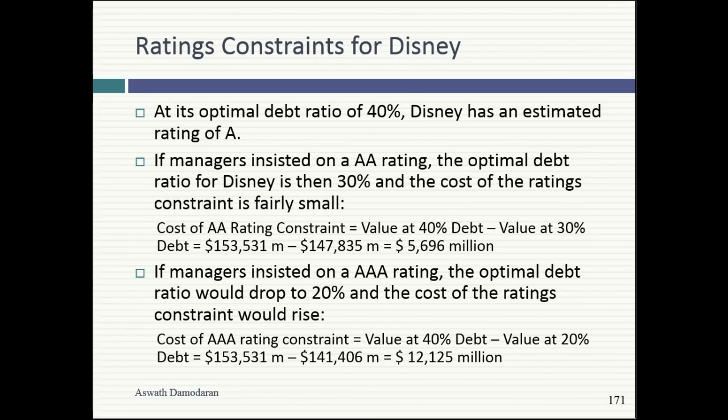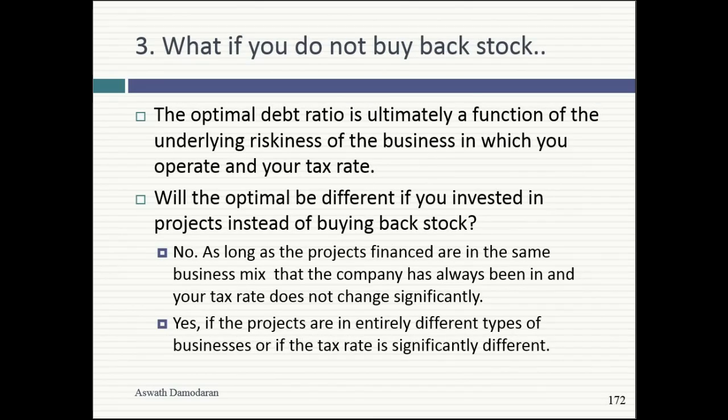Here's the final question recap: why should we do it — $19 billion; what if something goes wrong — you've got enough buffer. Now the final question: Disney says we have big plans — build the Shanghai theme park, make Star Wars sequels — it'll cost us money. You've told us we have excess debt capacity; this seems like a marriage made in heaven. You have excess debt capacity and great projects. Why can't I use them? Will the optimal be different if instead of buying back stock I expand my business?